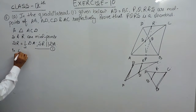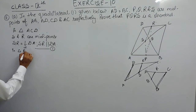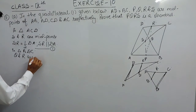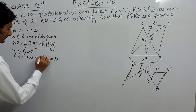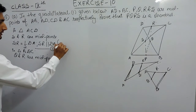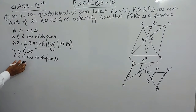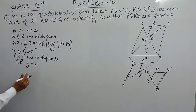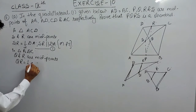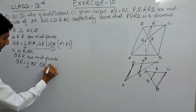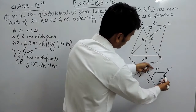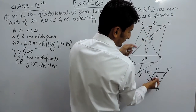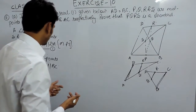Similarly, in triangle BDC, Q and R are the midpoints. So, according to the midpoint theorem, if I join the midpoints in this triangle, QR should be half of BC and QR must be parallel to BC. This QR must be parallel to BC and must be half of BC, because I am joining the midpoints Q and R. This is our second equation.